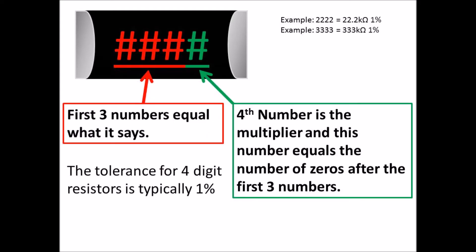Next is the four-digit resistor where it shows four numbers. It's the same as a three-digit resistor, only the first three numbers are exactly what it says, and then the fourth number is a multiplier. So the example I show is 2222, where the first three numbers are 222 and the fourth one is a multiplier, which you add two zeros, which would be 22.2 kilohms.